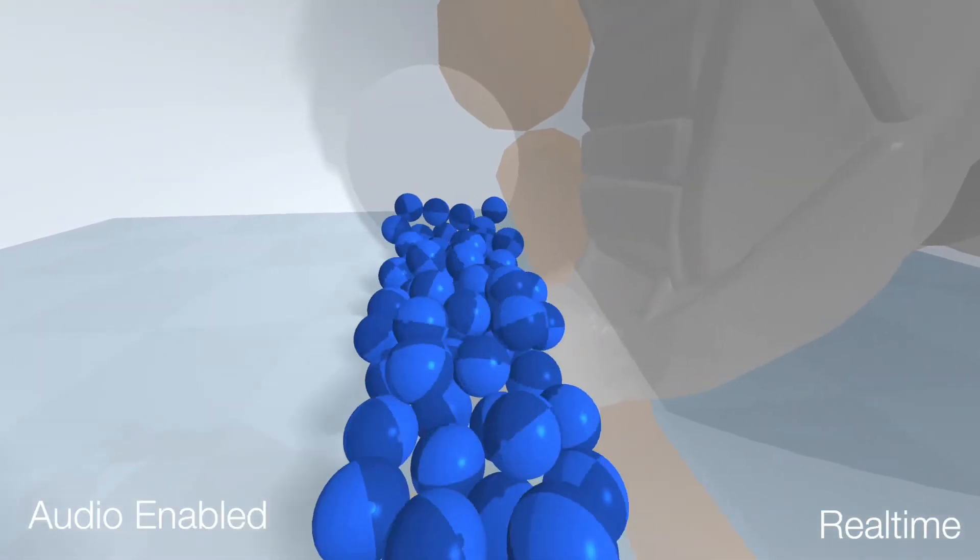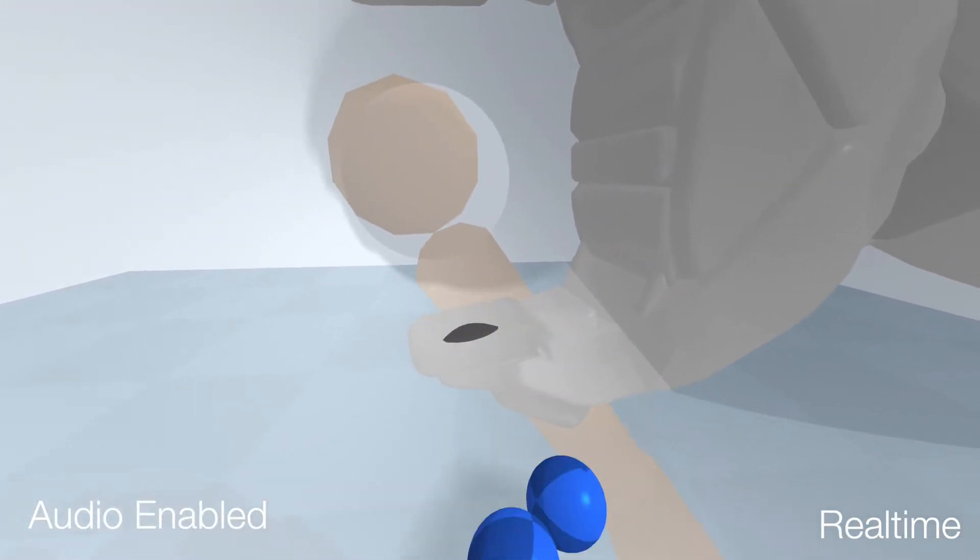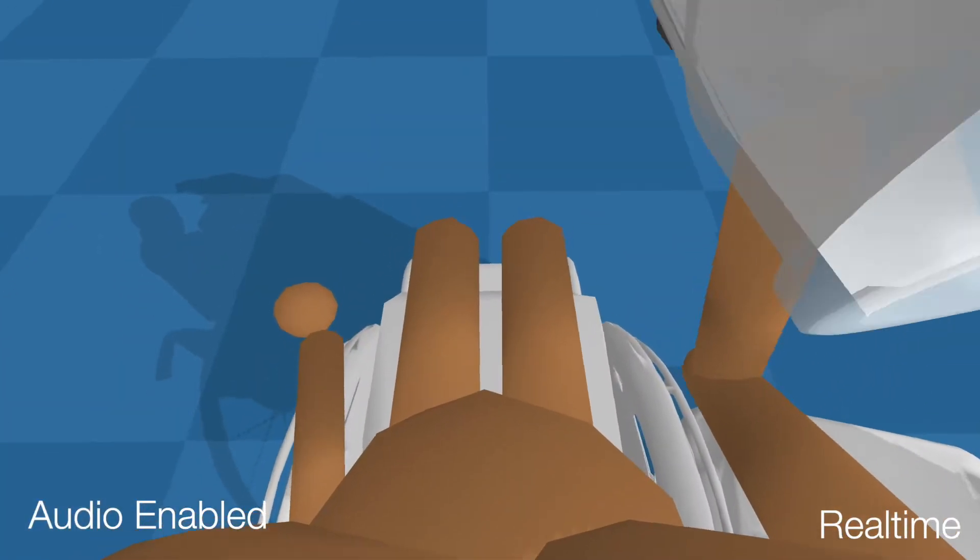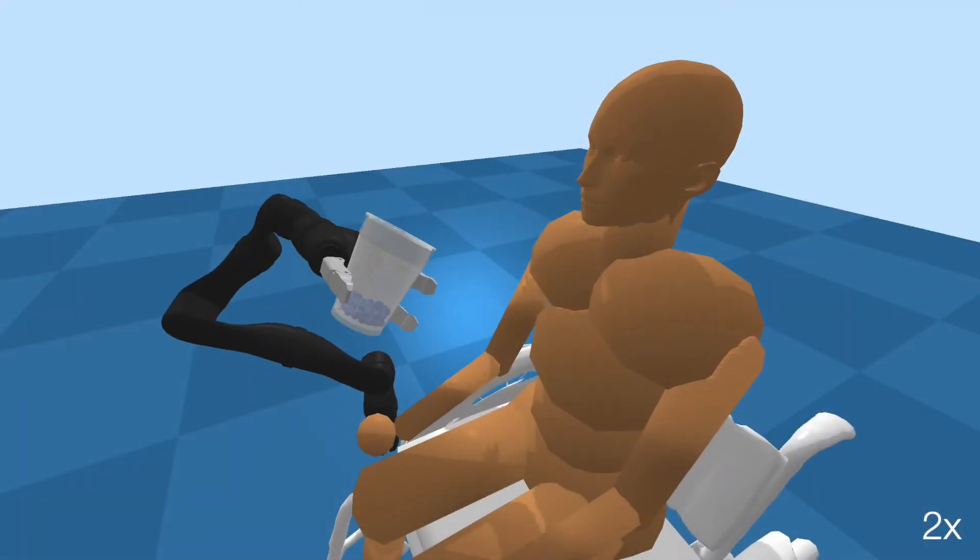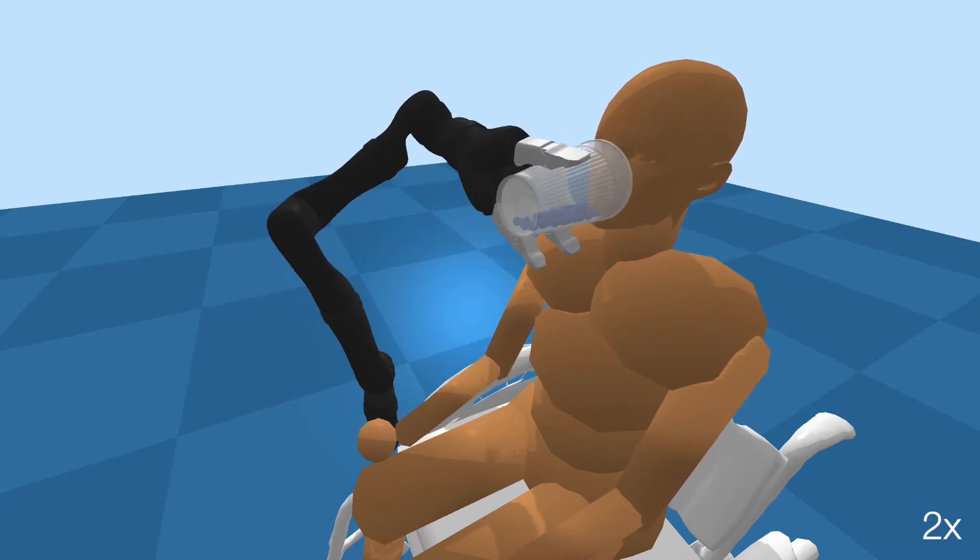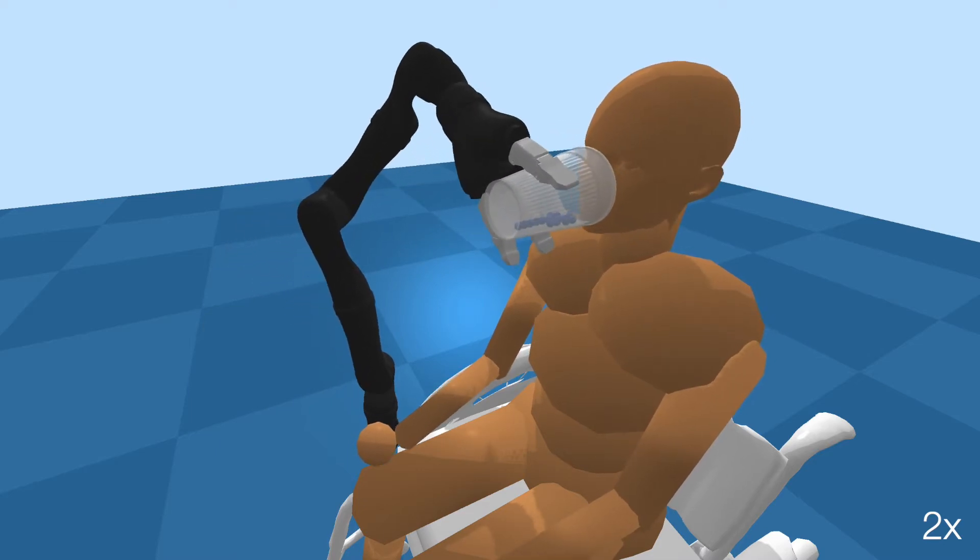Versatile robotic caregivers offer an opportunity to benefit millions of people worldwide, including older adults and people with disabilities. Physics simulation provides a unique environment for robots to learn how to interact with people without putting real people at risk.